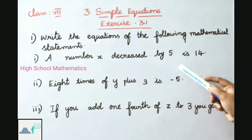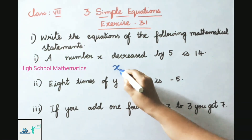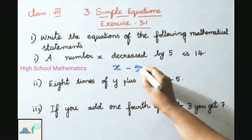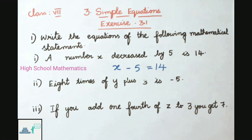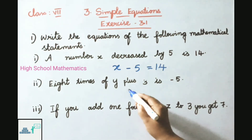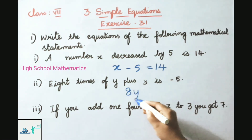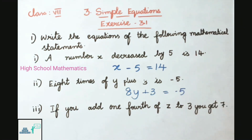First: a number x decreased by 5 is 14. That is, x minus 5 equals 14. Therefore the simple equation is x − 5 = 14. Second: 8 times of y plus 3 is minus 5. That is, 8y plus 3 equals minus 5. So the simple equation is 8y + 3 = −5.